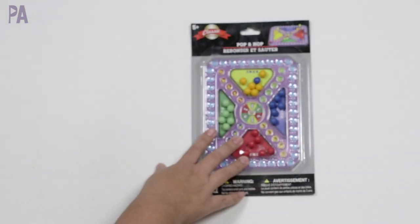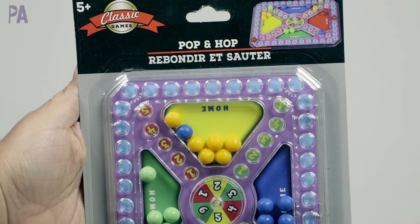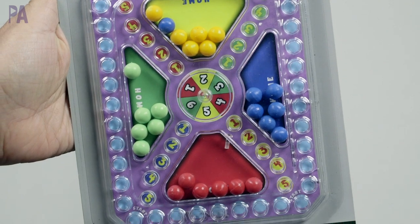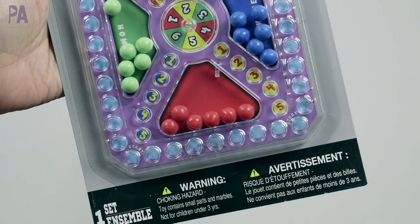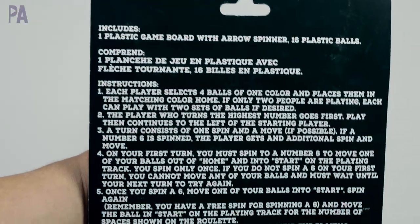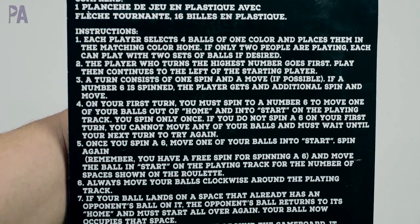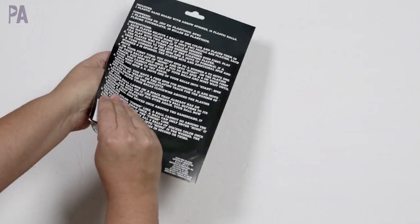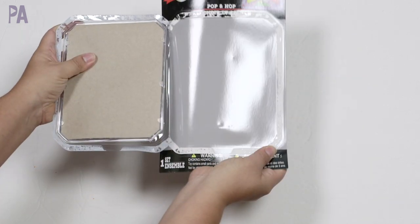Dollar Tree right now has a whole bunch of games and they usually have games, except they are some new games or at least new packaging. We have this one, which is called pop and a hop, which I think is very similar to maybe a trouble game. So we're going to take it out and check it out and see what's going on. On the back too, they have the full instructions. Might want to keep the instructions in case you need those later.